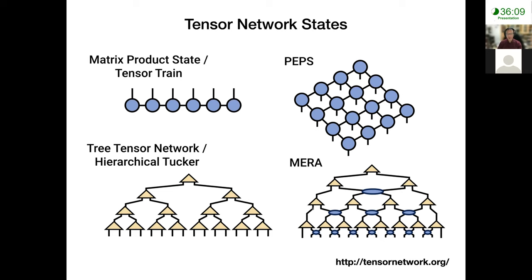I'm going to talk about familiar tensor network states. First, I will use matrix product states as a simple example to discuss what I mean by a system with topology. Then I'm going to extend this idea to Kitaev models. Many people in this workshop will talk more or less about other tensor network states.